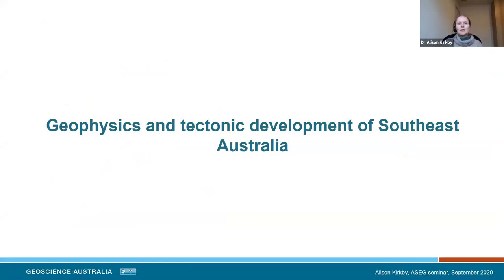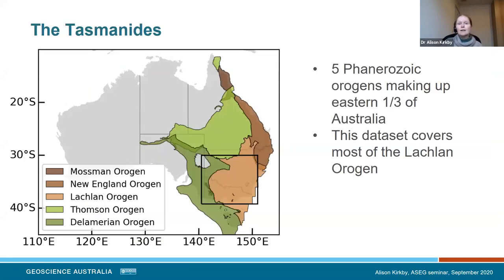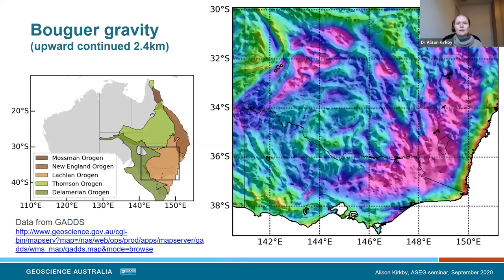Moving into southeastern Australia, I'll introduce the area by looking at geophysical data that existed before Auslamp. We're looking at the Tasmanides — five orogens making up the eastern third of Australia. This dataset is concentrated in the Lachlan Orogen, imaging most of the Lachlan and some of the eastern Delamerian Orogen. I'll show you the Bouguer gravity anomaly map compiled by GA, upward continued to 2.4 kilometres. One thing that jumps out is a concentric geometry centered in southern New South Wales.